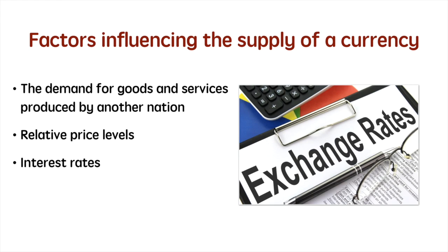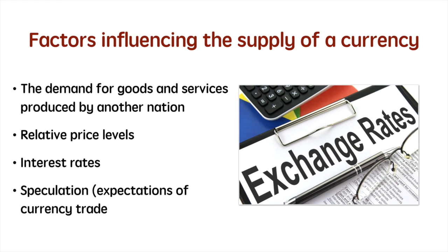If Americans demand British goods and services, they need pounds. Additionally, if the UK price level falls relative to the US, British goods will be more price competitive. If it's more rewarding to save money in the UK, then Americans will increase their deposits at UK financial institutions. Finally, if Americans believe the UK pound is currently undervalued and will rise in value in the future, they may choose to buy it today in order to benefit from its rise in the future. In this example, Americans are either increasing or decreasing their supply of dollars in the foreign exchange market.